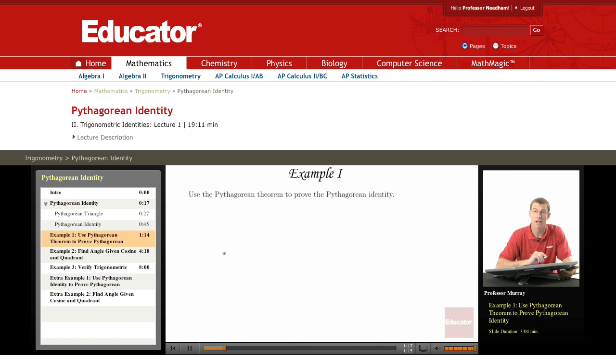For example, we're going to start with the Pythagorean Theorem. Remember that's a squared plus b squared equals c squared. We're going to try to prove the Pythagorean identity: sine squared x plus cosine squared x equals 1.